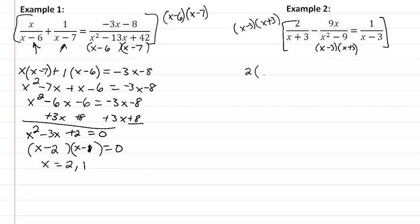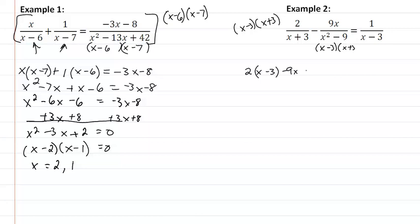So we are going to have 2 times x minus 3 minus 9x. Actually we don't need to multiply that one times anything, so we will just have 9x there equal to 1 times x plus 3. So we get 2x minus 6 minus 9x equal to x plus 3. Let's get our like terms together. So we have negative 7x minus 6 equal to x plus 3.